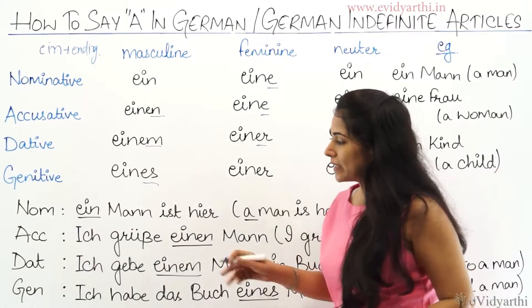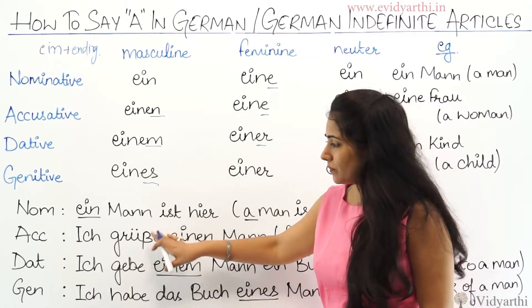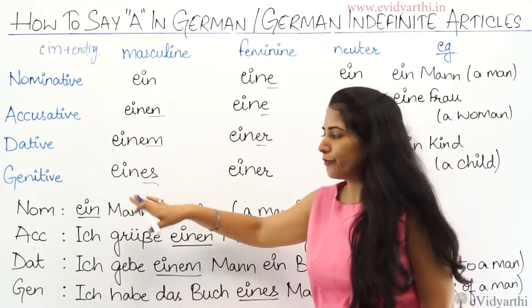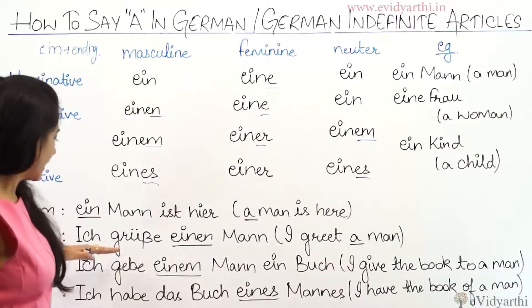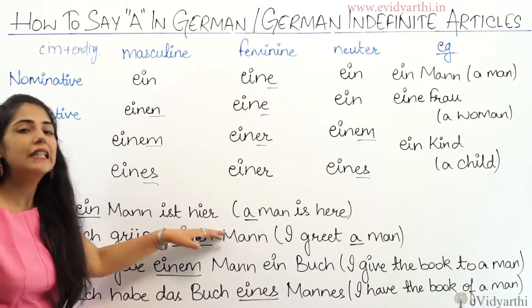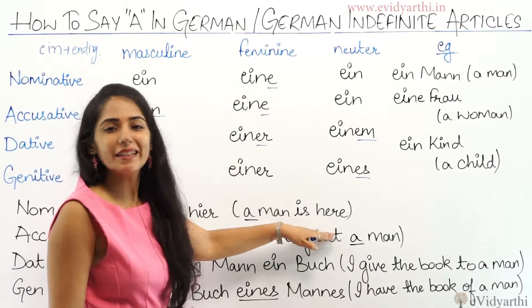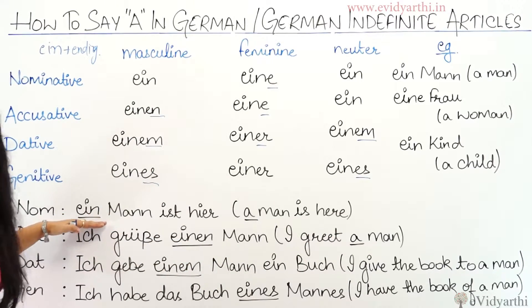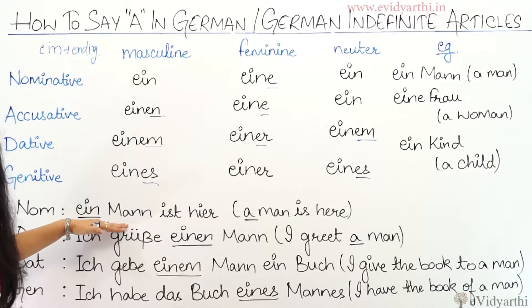Now let's see some sentences using the indefinite article. It's very simple. 'Ein Mann ist hier' means 'a man is here'. 'Ein Mann' — 'ein' is the indefinite article and this means 'a man'.